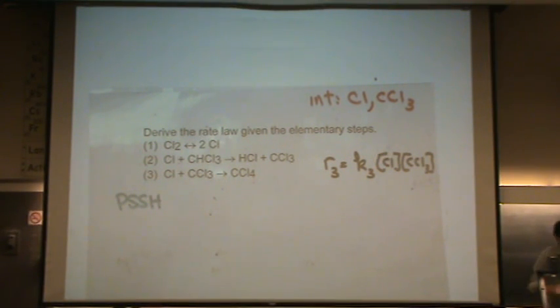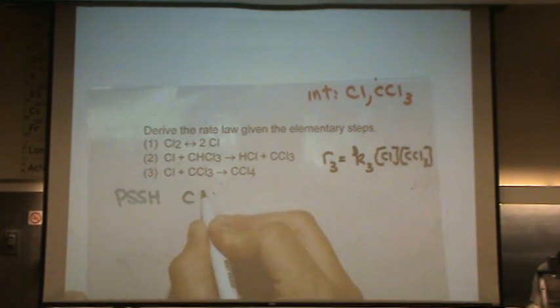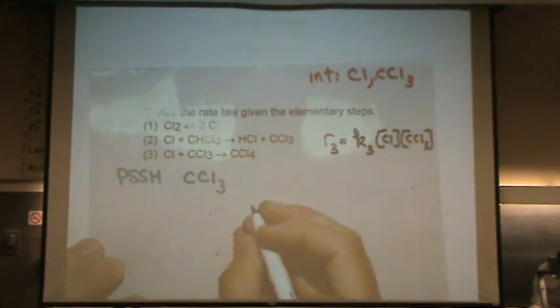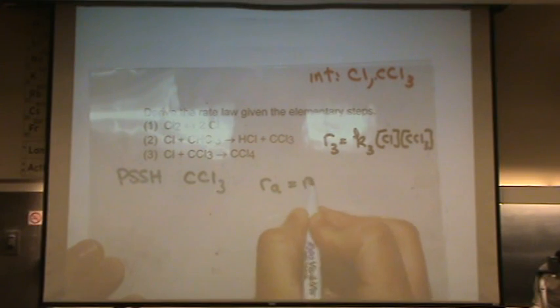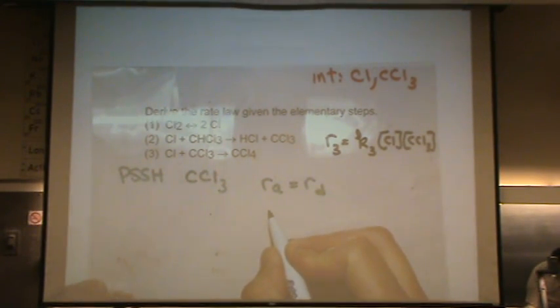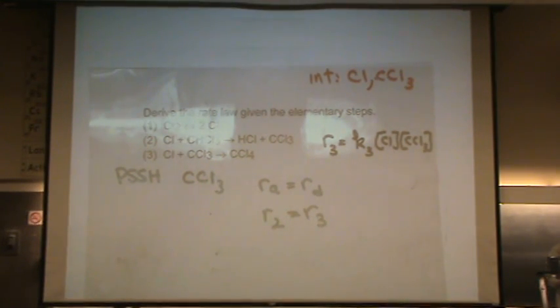So, it's hard for me to pretend which one to pick because I already know which one I want to pick. But you would have to guess. Let's pick the CCL3, I guess. I can do the other one in a minute if you'd like to see how that won't work. So, we're going to do rate of appearance equals rate of disappearance. Where does it appear? Rate 2. Where does it disappear? Rate 3. There it is.